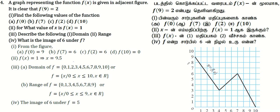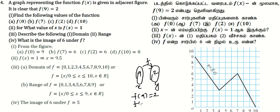Looking at the graph, f of 9 equals 2. You know the domain and range. The function f of 9 equal to 2 means x is 9 and y is 2 — x is the input on the x-axis and y is the output on the y-axis. So f of 0: x is 0 and y is 1, meaning f of 0 equals 1.